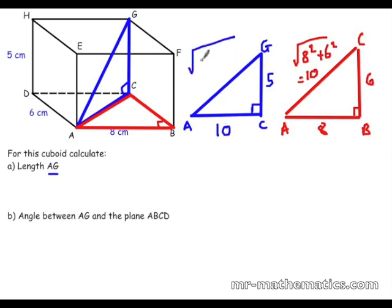So we can use the same Pythagoras idea to work out 10 squared plus 5 squared, which is the square root of 125. And that means length A to G is 11.18cm.